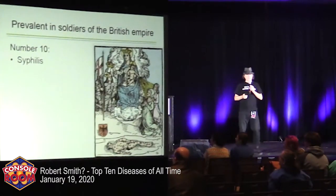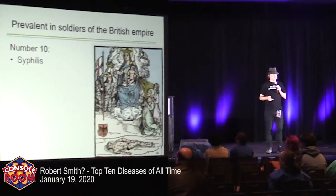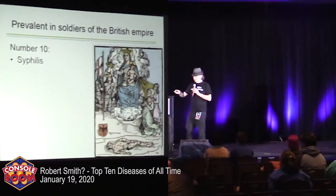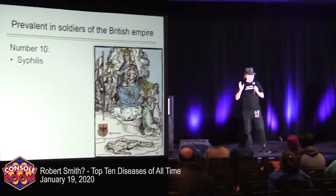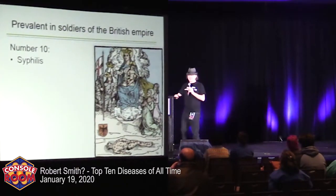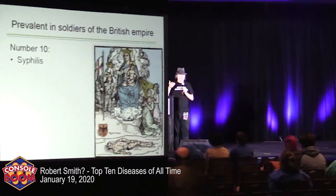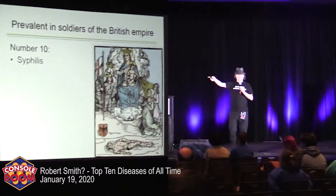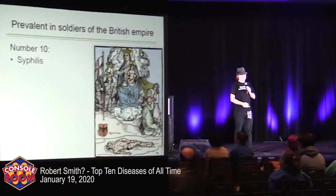Number 10 is syphilis. We don't really think of it as hugely prevalent now, but it certainly was — syphilis ran through the whole of the British Empire. One of the tragedies of HIV is the myth that having sex with a virgin cures HIV. This is absolutely not true, and you'd likely infect the virgin. This myth was passed from British soldiers who believed the same thing about syphilis — that having sex with a baby or virgin would cure syphilis. These terrible tragedies run through the whole of human history.